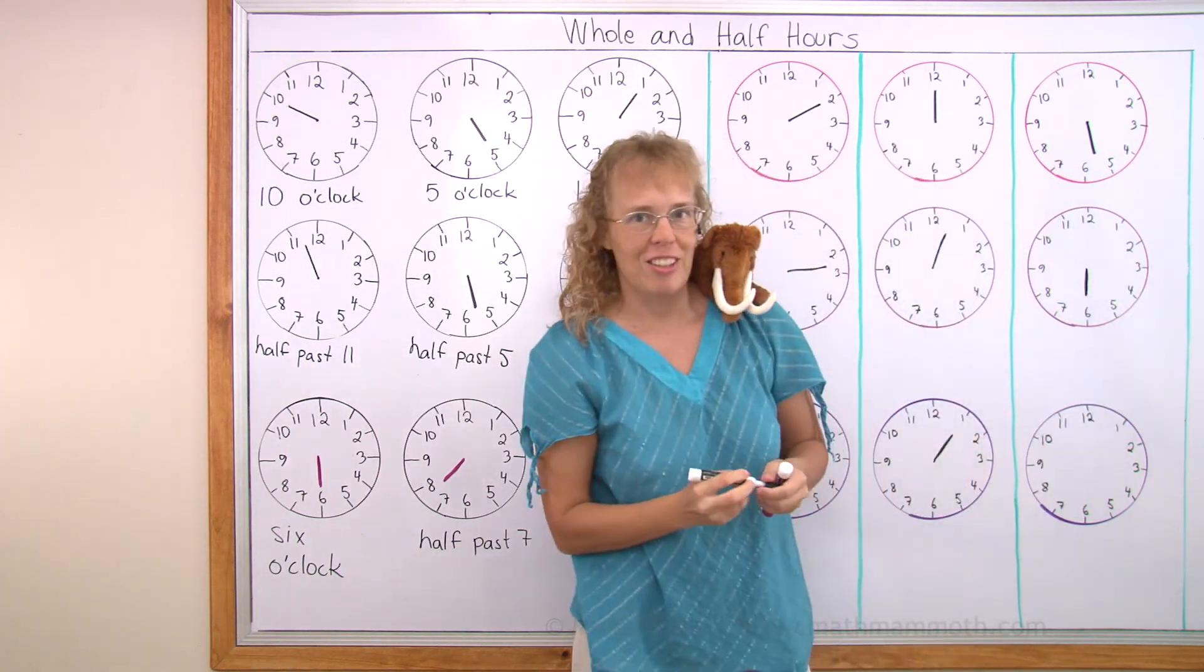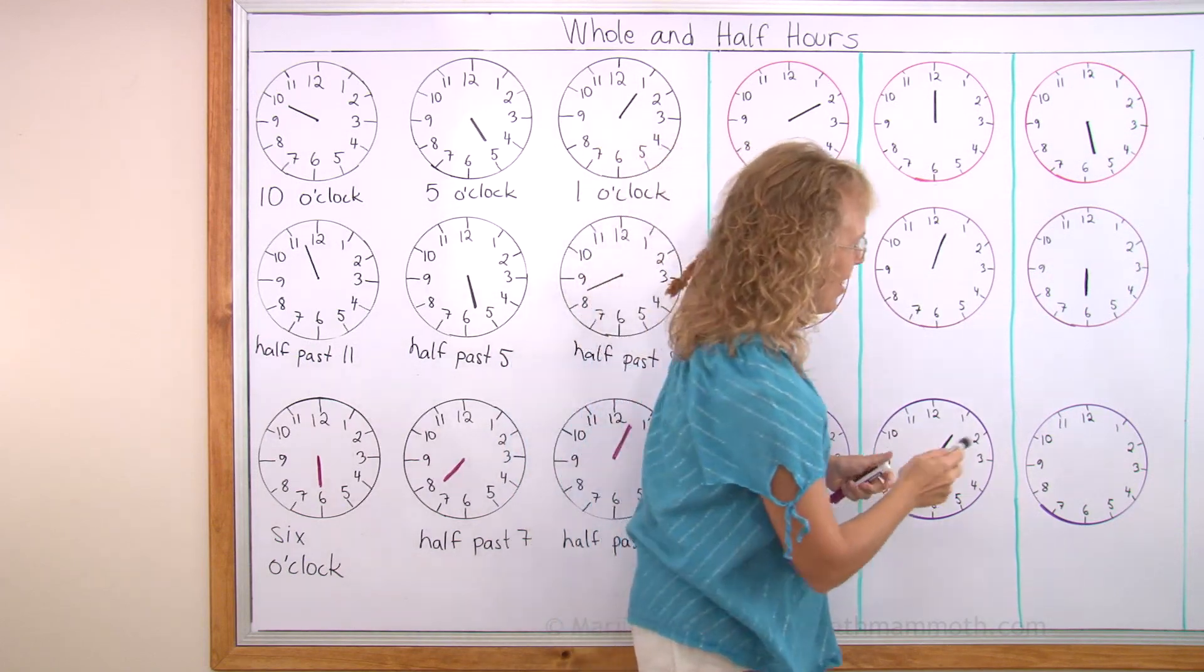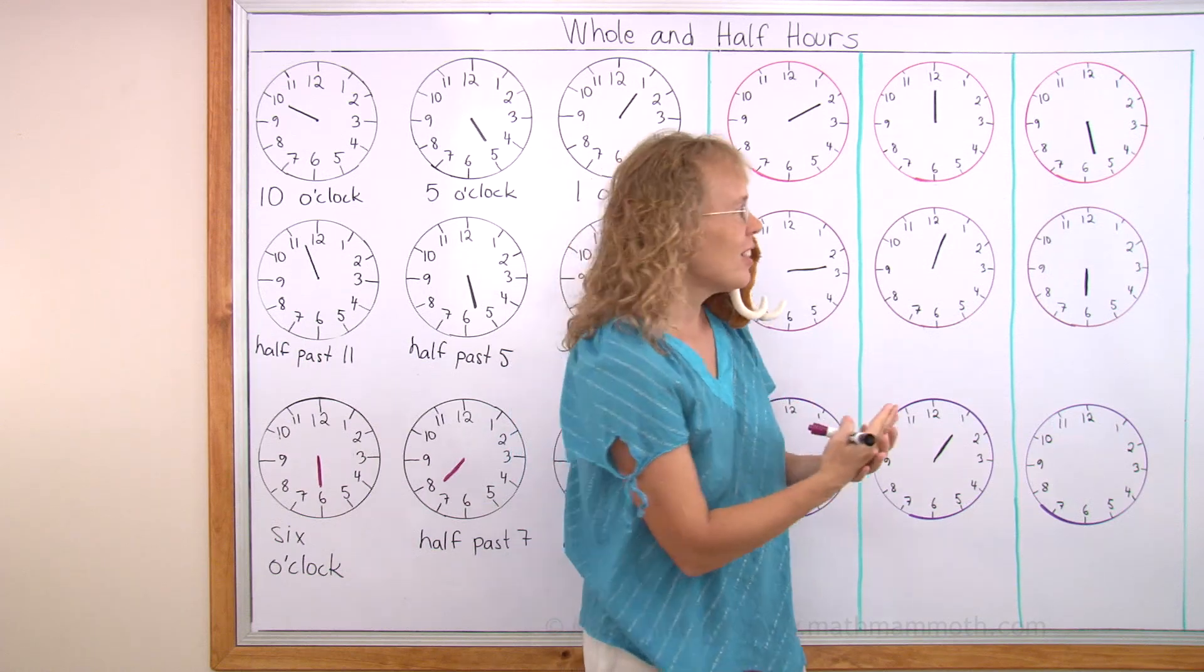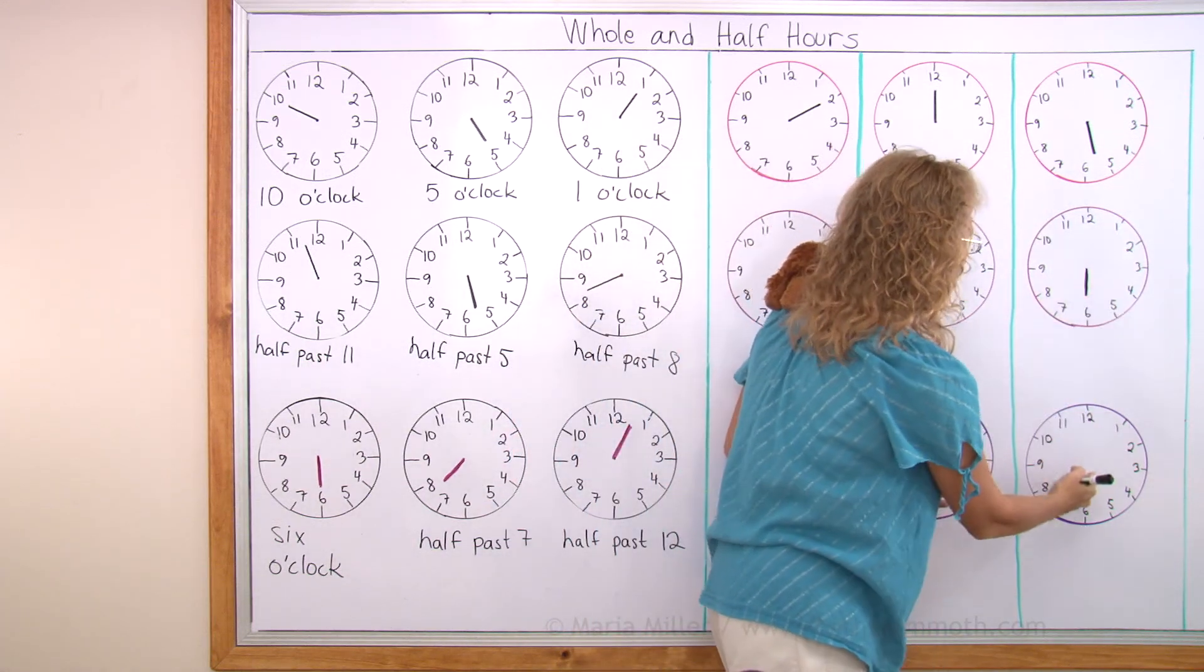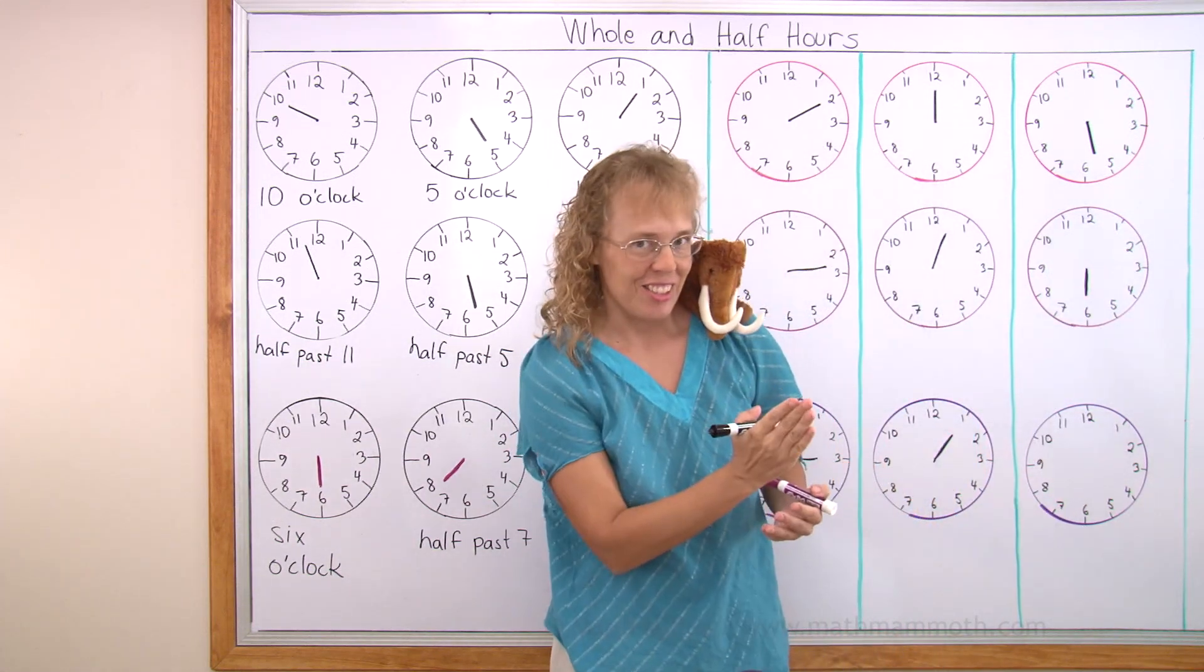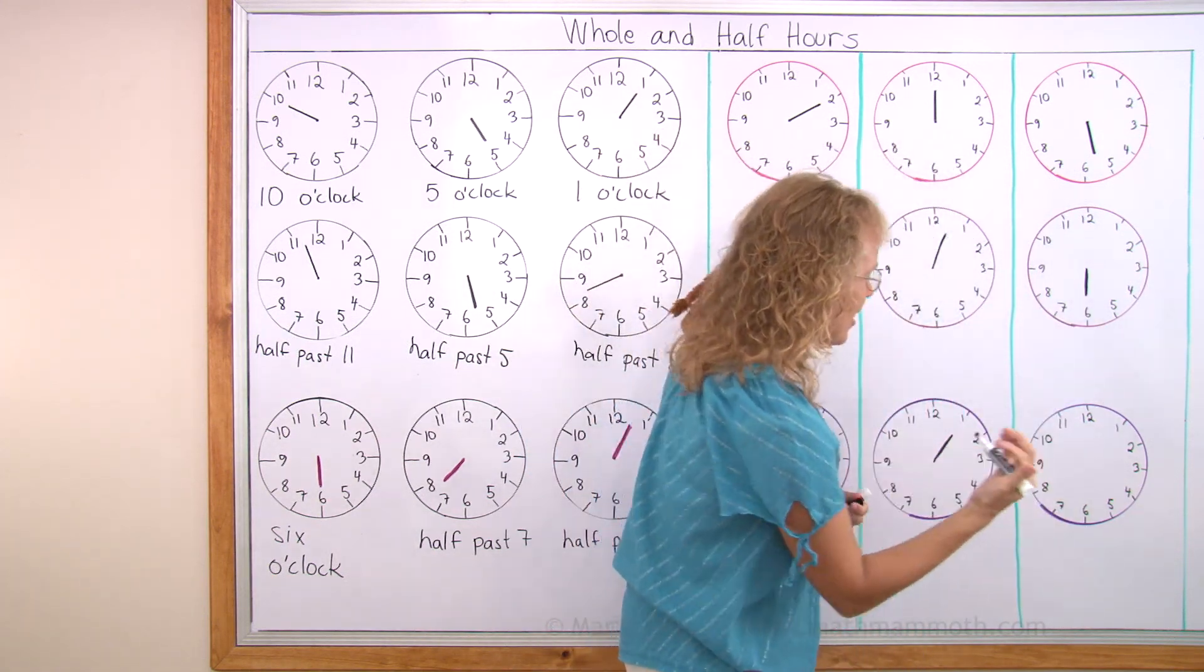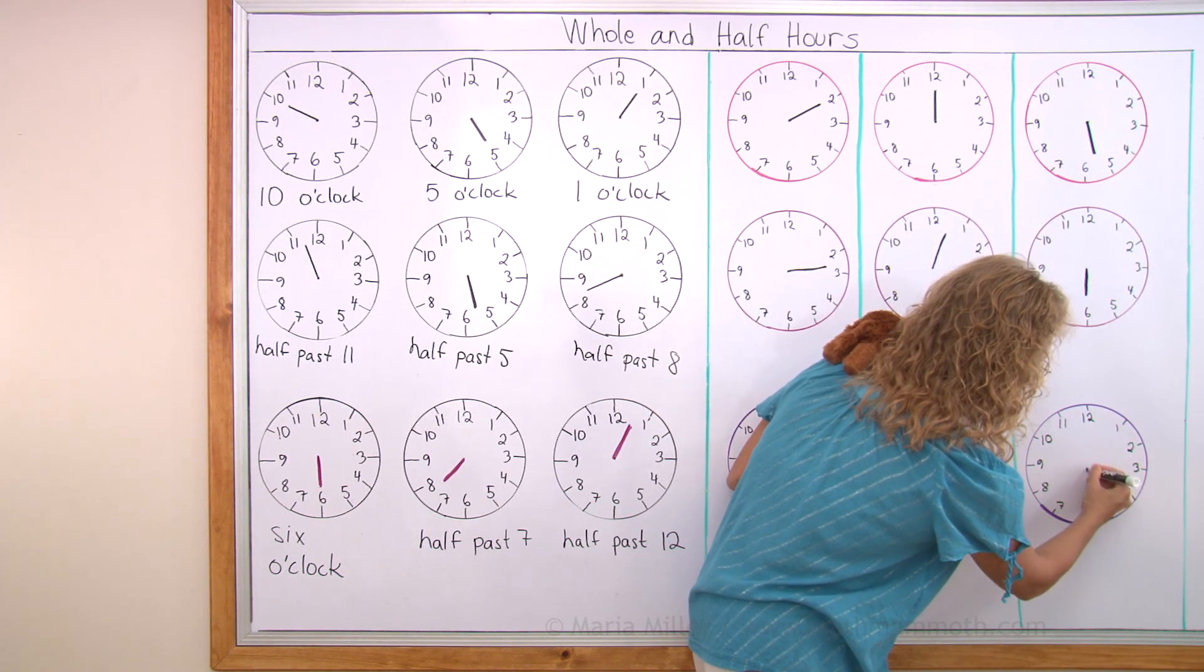And then half an hour later yet. 6 o'clock. Half an hour later. If it was a whole hour later. 6 o'clock and whole hour later would be 7 o'clock. Right? But 6 o'clock and half an hour later is half past 6. Right?